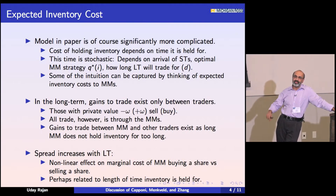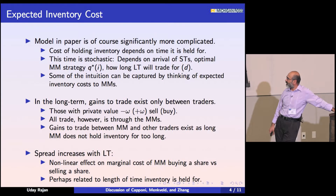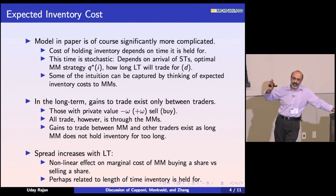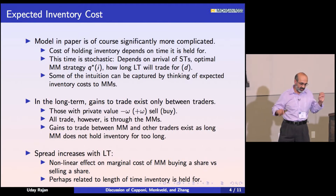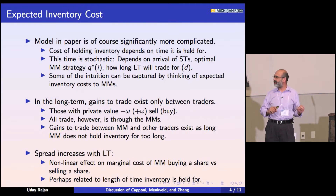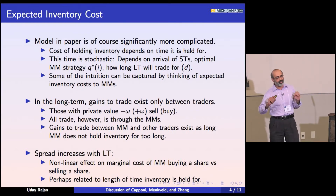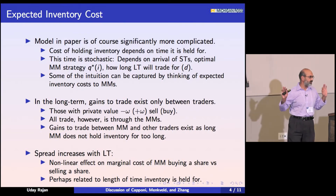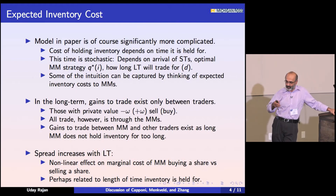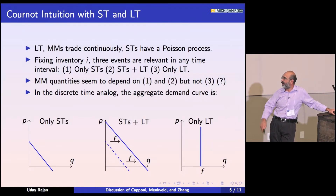The bid-ask spread increases when the large trader comes in. There's some sort of nonlinear effect in the marginal cost of holding inventory — the marginal cost of buying a share versus selling a share. I didn't quite get the intuition for that from the model. My best guess is it's related to the length of time that we ask the market maker to hold this position for.